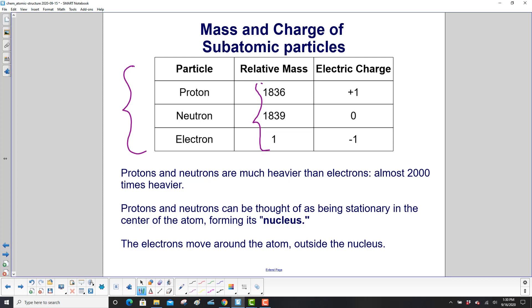Protons and neutrons can be thought of as being stationary in the center of the atom forming its nucleus. The electrons move around the atom outside the nucleus.